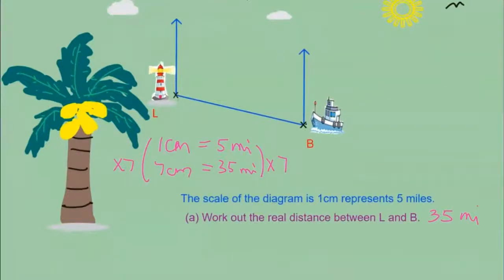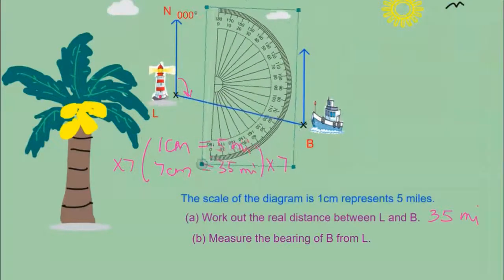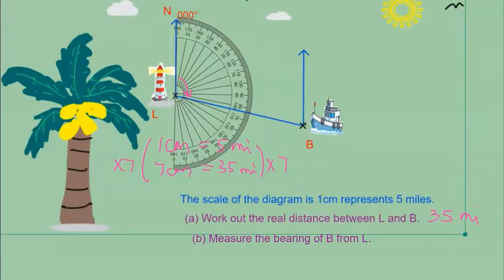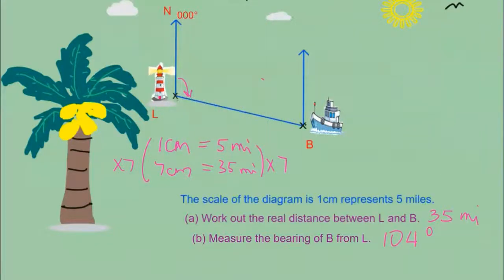The second question is to measure the bearing of B (the boat) from the lighthouse. L comes after the word 'from', so the north is on the lighthouse represented by L. That's the north — zero degrees in three digits. Measure clockwise from the north using a protractor. Adjust the protractor to start reading from zero degrees, read clockwise, and read from the second line since the top line starts from 180. The reading is roughly 104 degrees — label the angle 104 degrees. It's already three digits so leave it at that.